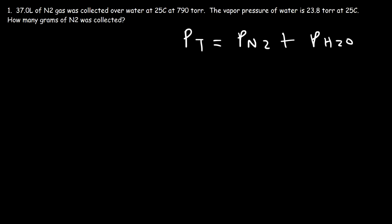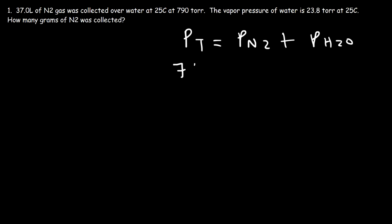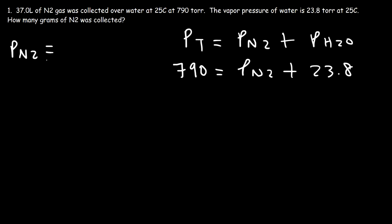We know the vapor pressure of water, which means we can calculate the partial pressure of nitrogen — that's the first thing you should do in a problem like this. The total pressure is 790 Torr and the vapor pressure of water is 23.8 Torr, so the partial pressure of N2 is 790 minus 23.8.